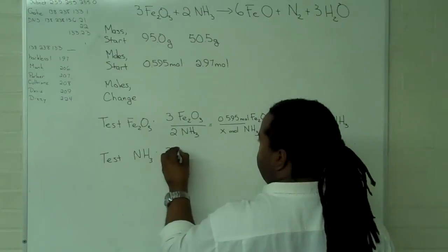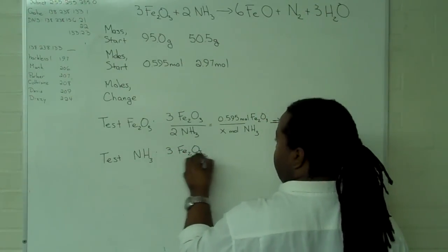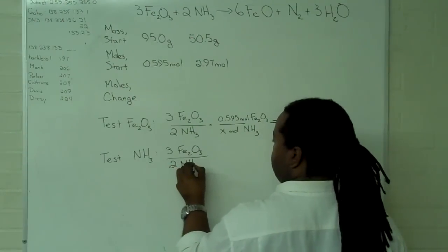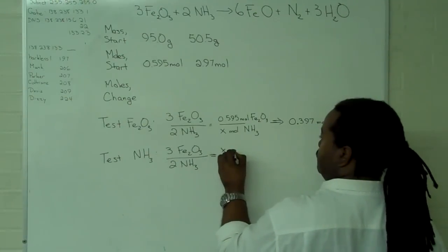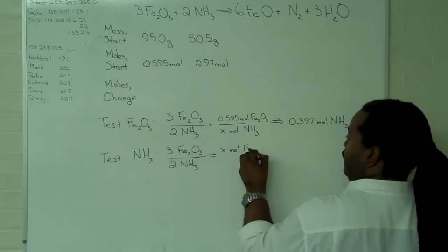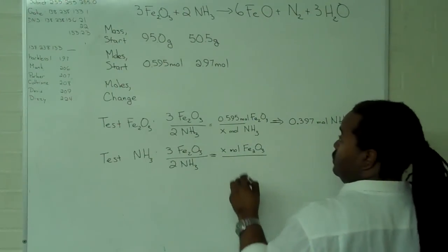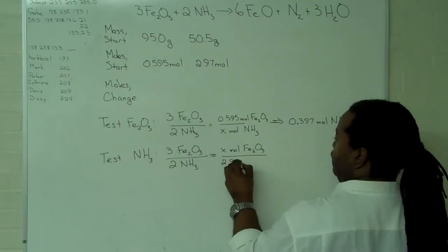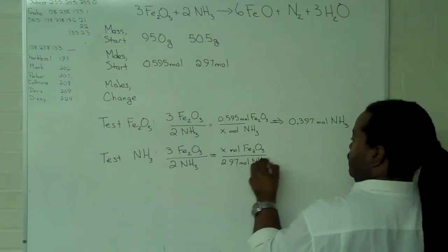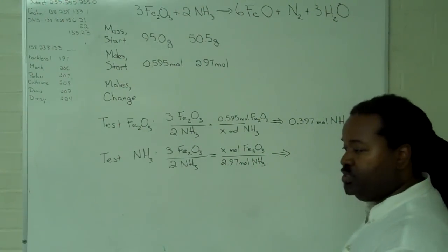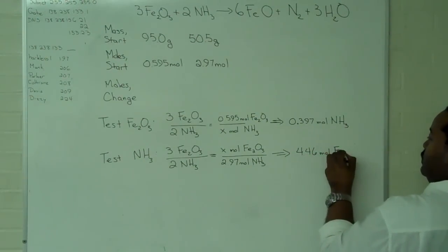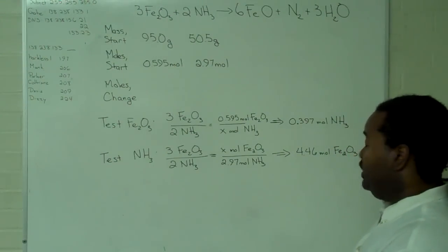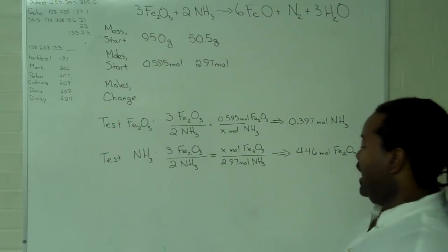We can compare this against the result we'll get when we do the corresponding test for ammonia, where we want to determine how much in moles of the iron-3 oxide will be necessary to completely use up the given amount of moles of ammonia. In this case, we determine that we need 4.46 moles of the iron-3 oxide.